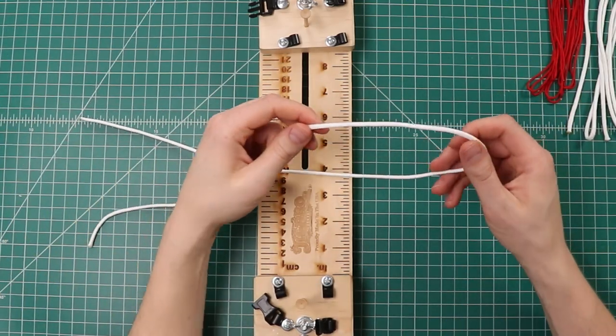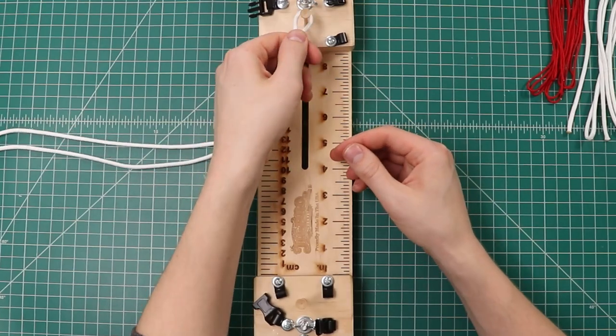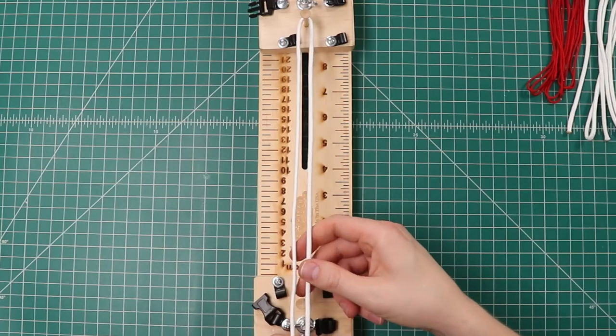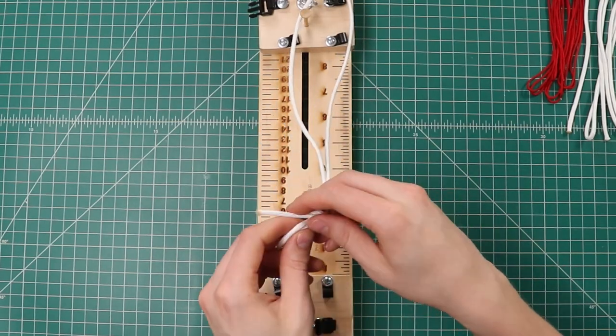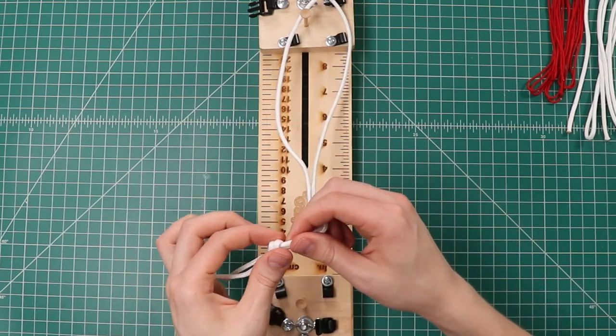To start off we're going to take that three foot section and fold it in half and loop that top end around the peg on our jig. And then on this bottom side we just want to tie an overhand knot. It doesn't really matter where that's at, just close to the end. We're going to be redoing that with a better knot later.